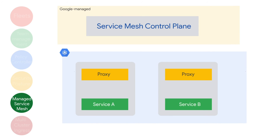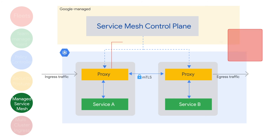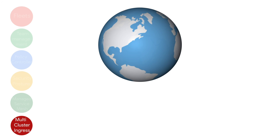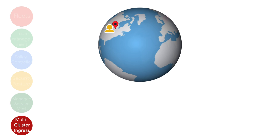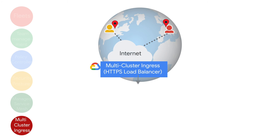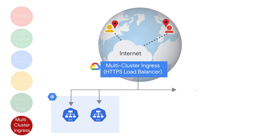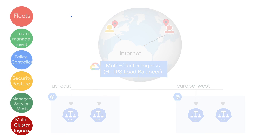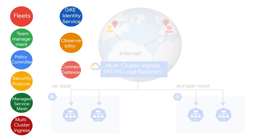GKE Enterprise provides a fully managed integrated service mesh to manage the services in your fleet, providing tools for application security, networking, and observability across your mesh. Multicluster Ingress is a service where you can deploy shared load balancing resources for applications across multiple GKE clusters and across regions. And there are many more features included in GKE Enterprise.